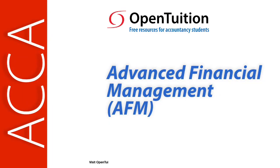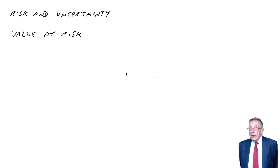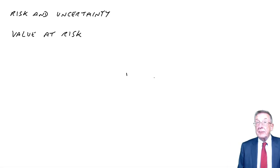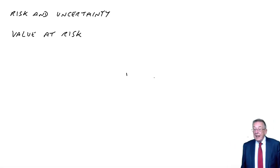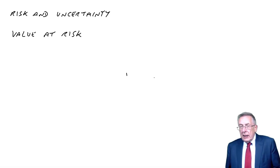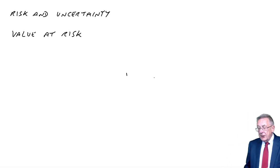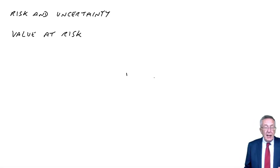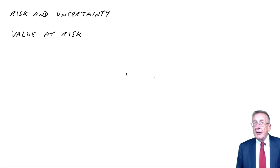This is a lecture from Open Tuition. To benefit from the lecture, you should download the free lecture notes from opentuition.com. This is the second lecture on the chapter on risk and uncertainty. The remaining topic we need to look at is something called value at risk, which is something rather different.